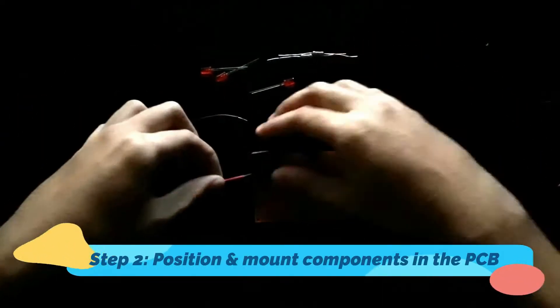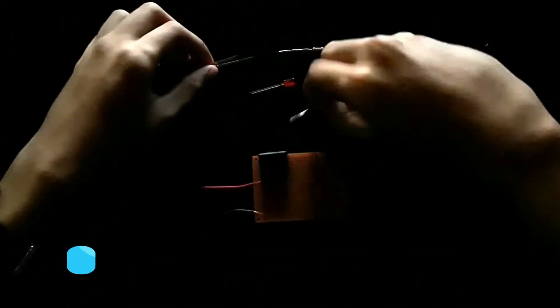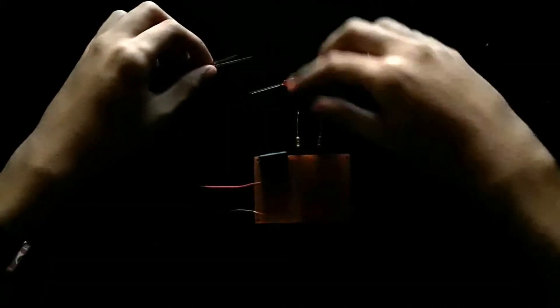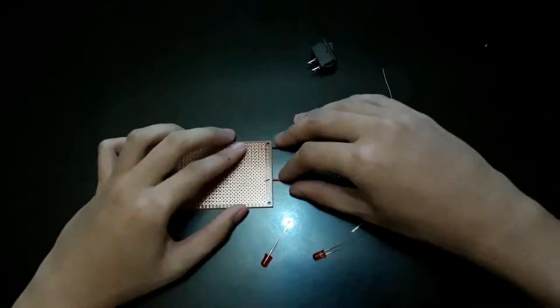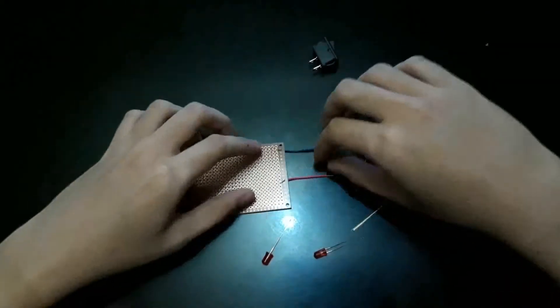Step 2: Position and mount components in the PCB. Let's arrange the components in the PCB based on our design that we've made. Let's insert its pins in every hole in the PCB.